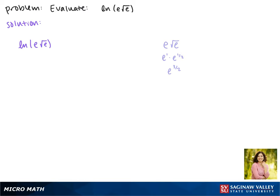So here we're taking the natural log of e to the 3 halves. Now we're going to ask, e raised to what power gives us e to the 3 halves? Because the natural log has a base of e.